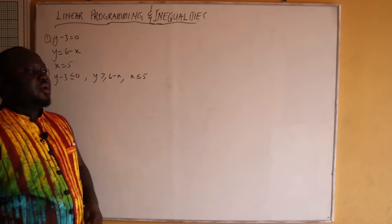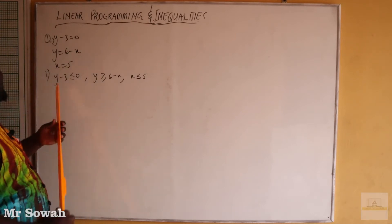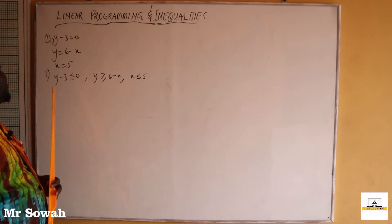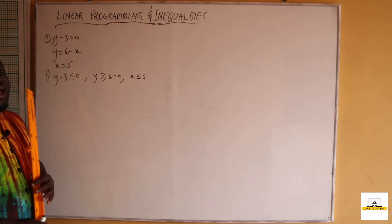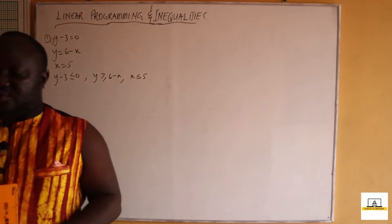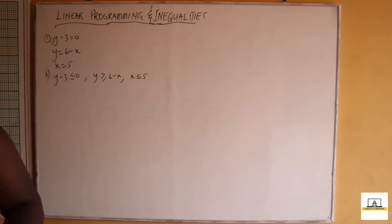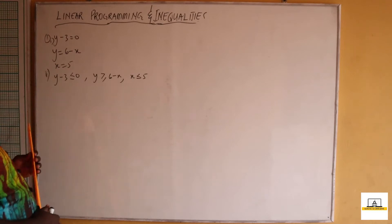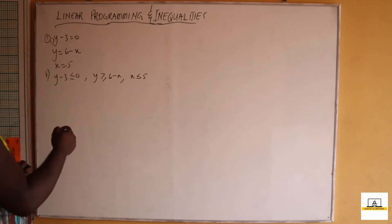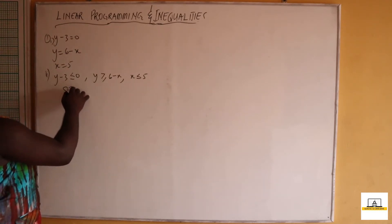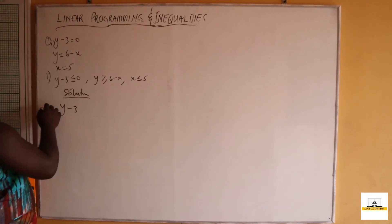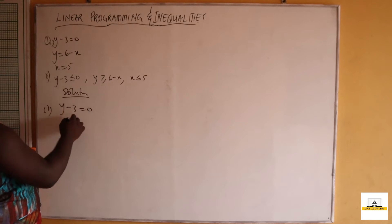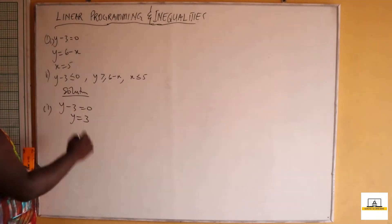In the given question, we are told to draw the lines y minus 3 equals 0, y equals 6 minus x, and x equals 5, using a scale of 2 cm to 1 unit on both axes. For the first line, y minus 3 equals 0, this means y equals 3. So that is the line we will be drawing.